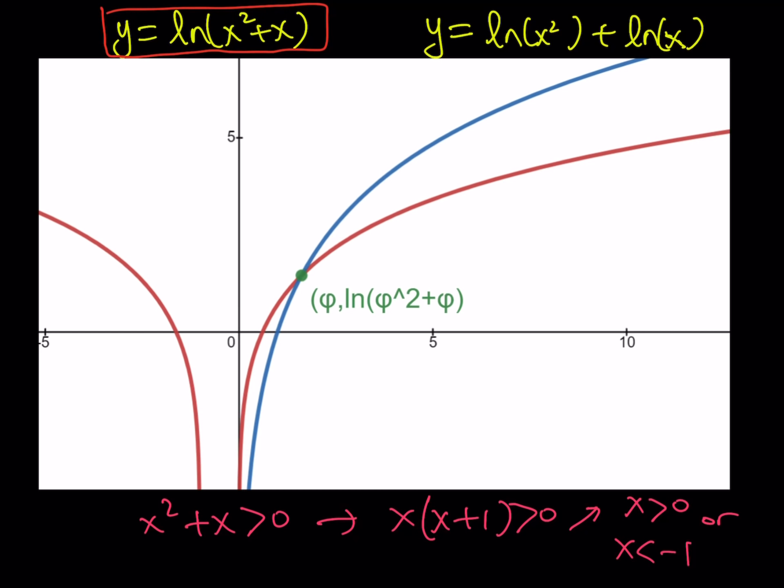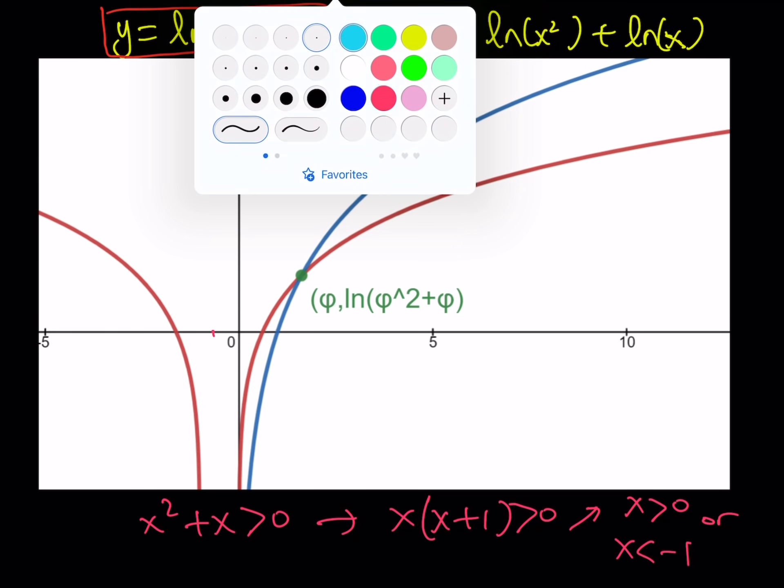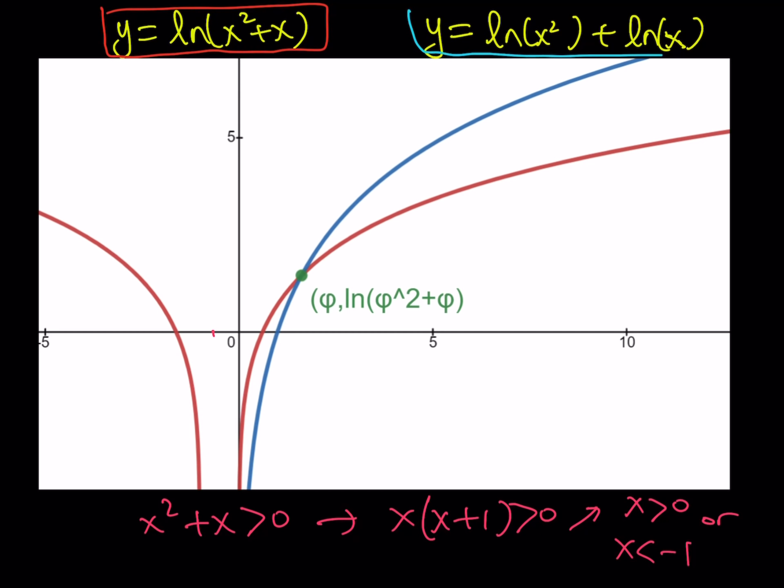Because if x is less than negative 1, then you're going to get a positive product. And when x is positive, obviously you're going to get a positive product. So notice that we do have a negative 1 as our vertical asymptote in the middle. And we have kind of two branches. But the other function, which is the blue one, that only has one piece.